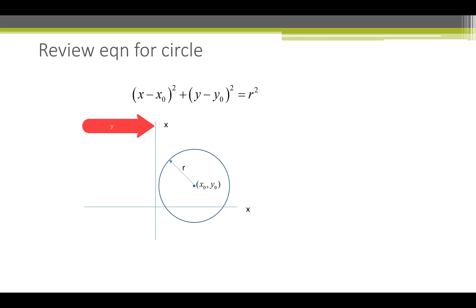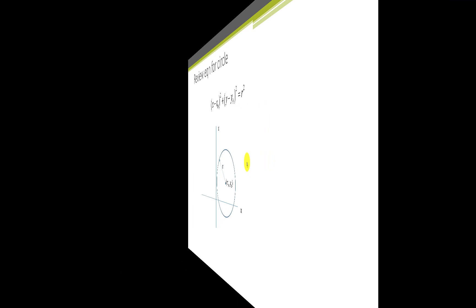Since Mohr's Circle is a circle, we need to review the basic equation for a circle. X-naught and Y-naught are the center of the circle. The radius is shown here, and the algebraic equation for the circle is (X minus X₀)² plus (Y minus Y₀)² equals R².